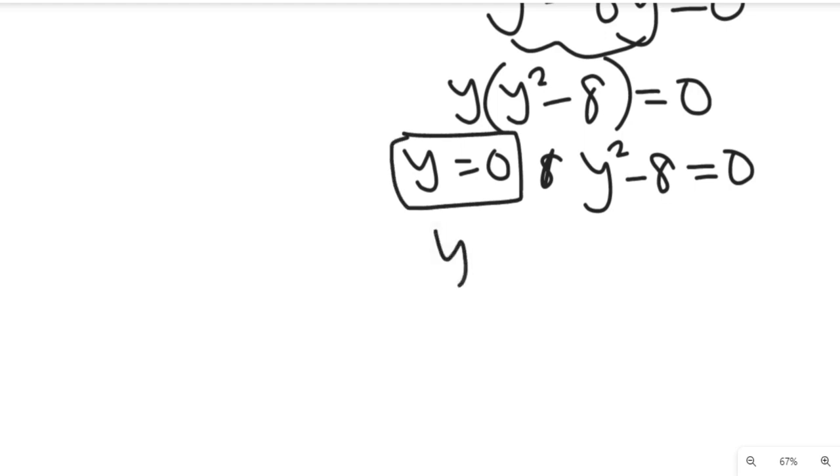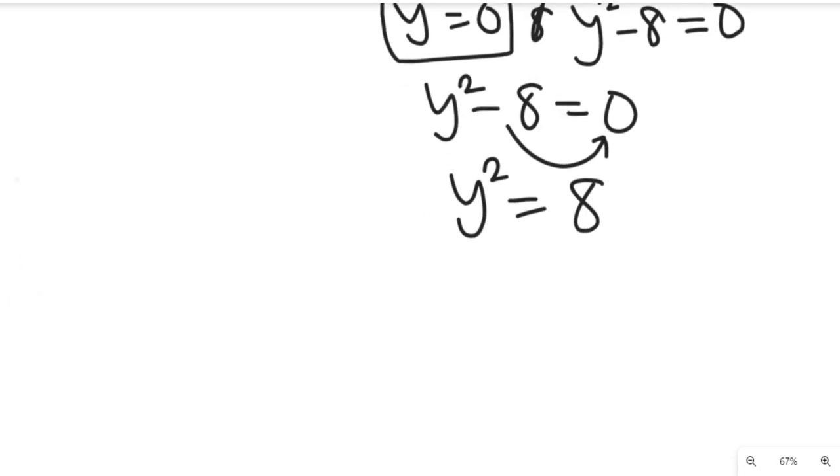So we'll take the other equation to be y² minus 8 equal to 0. So once this comes this way, our y² will be equal to 8. So what do we do from here?